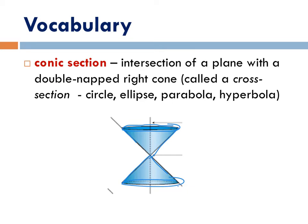The four conic sections we're looking at are circles, ellipses, parabolas, and hyperbolas. Today's focus is going to be mainly looking at that parabola shape when we slice the cone.